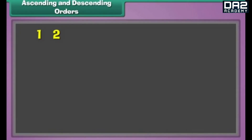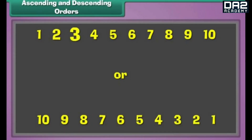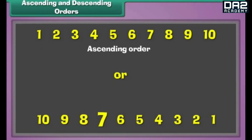Numbers can be listed as: one, two, three, four, five, six, seven, eight, nine, ten — or in reverse: ten, nine, eight, seven, six, five, four, three, two, one. Arrangement of numbers from the smallest to the largest is called ascending order. Arrangement of numbers from the largest to the smallest is called descending order.